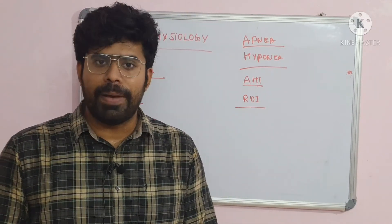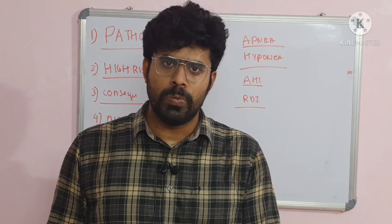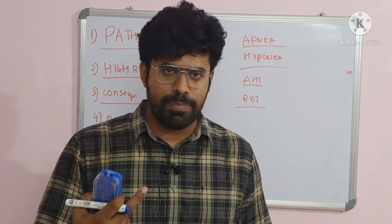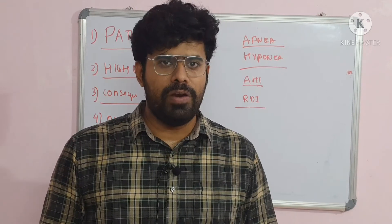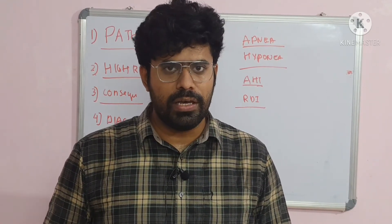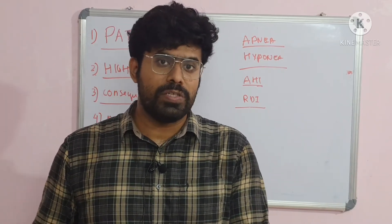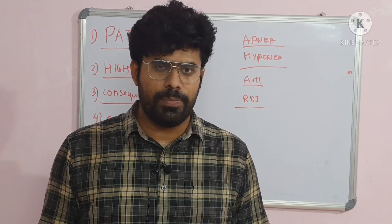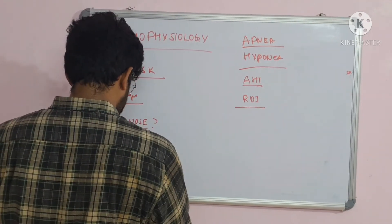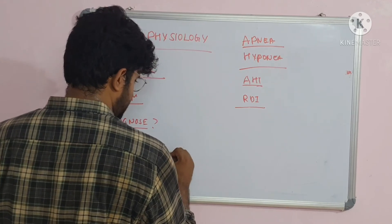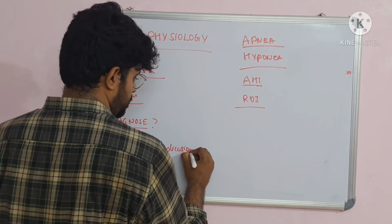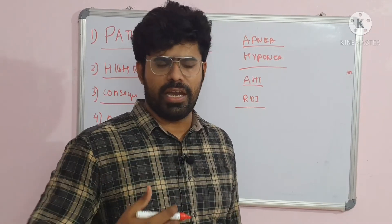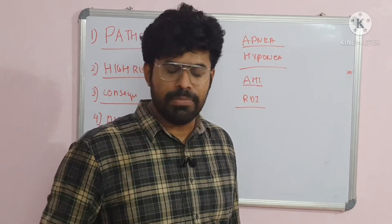The treatment for OSA is CPAP — continuous positive airway pressure — which opens the airways and prevents their collapse. It can be given as nasal CPAP or nasal-oral CPAP. CPAP will reduce blood pressure, reduce the incidence of complications, improve quality of life, and improve the risk of atrial fibrillation. The problem with CPAP is that it can cause claustrophobia, nasal bridge injury, and difficulty with compliance. These are the major problems.